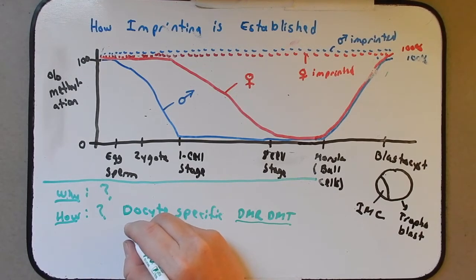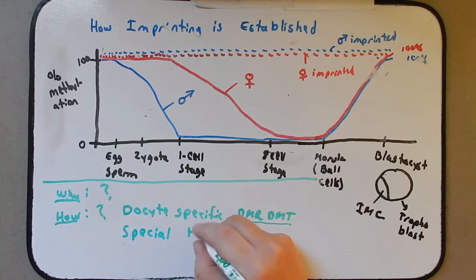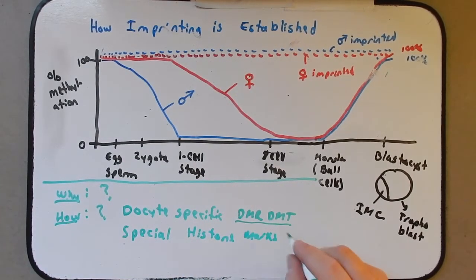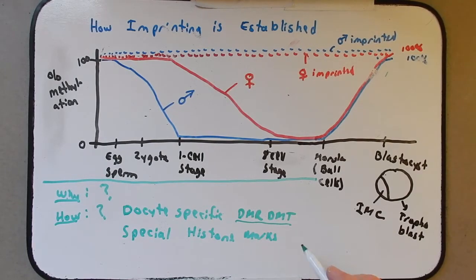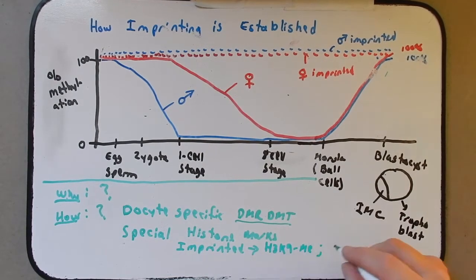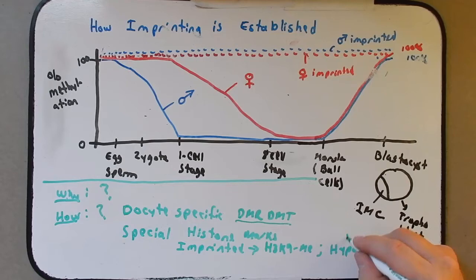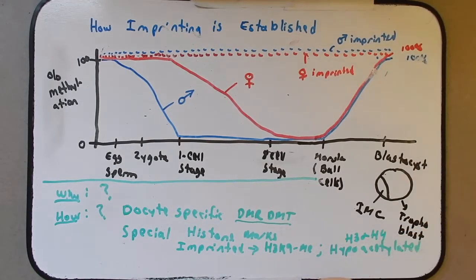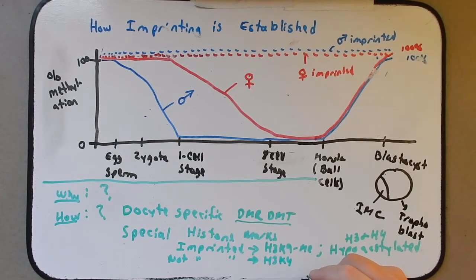We also know that there are some special histone marks. Most of which we've seen before. But they seem to be pronounced a little bit more strongly in these imprinted genes in the egg and sperm. So the ones that are imprinted, that is they're off, will have the H3K9 methylated. More striking is that it is hypoacetylated. Very few acetylations on H3 and H4. On the genes that are not imprinted, we see some of our favorites here like H3K4 being methylated. And H3K9 being acetylated.